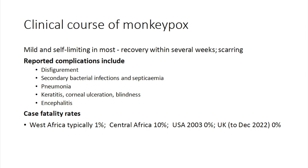Case fatality rates: clade 2 disease is associated with low mortality, typically 1%. Central African clade 1 can be up to 10%, depending on the outbreak. In the USA outbreak in 2003 there were no fatalities. That has changed in 2022, but in the UK we've still not had any monkeypox fatalities, which is good news.